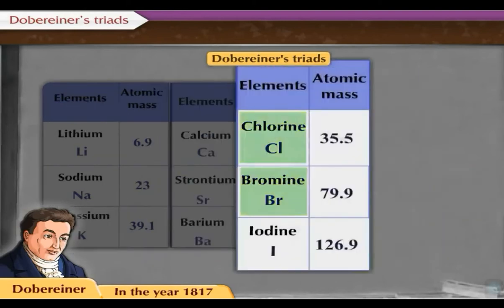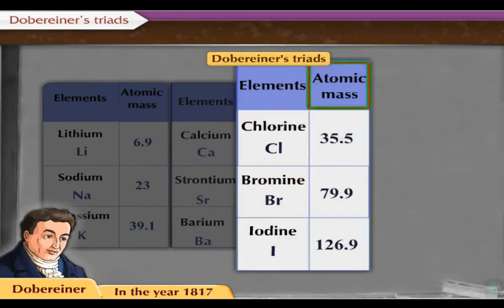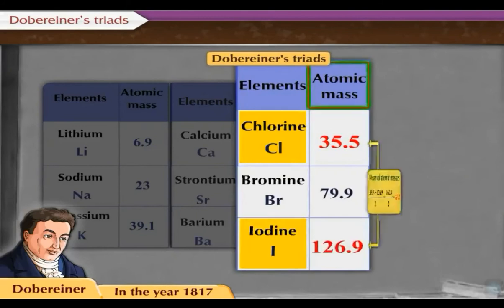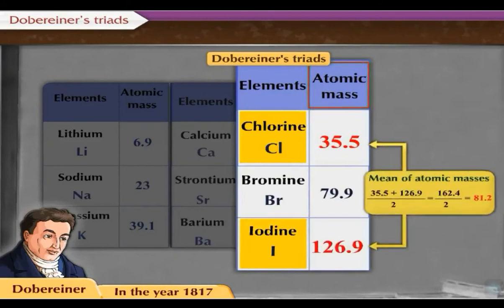Chlorine, bromine, and iodine form a triad. The atomic mass of chlorine is 35.5 and that of iodine is 126.9. Their mean value is 81.2, which is approximately equal to the atomic mass of bromine, which is 79.9.